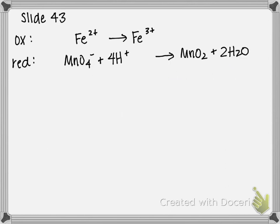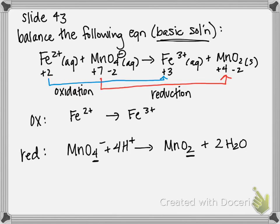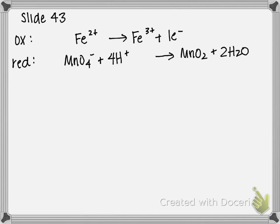Now I have these rewritten on a new slide. We're going to look at number of electrons transferred. For our oxidation, we're going from plus 2 to plus 3. That means we're losing 1 electron. And for oxidation, electrons are written on the product side. So plus 1 electron. For our reduction, recall our oxidation numbers. Manganese is going from plus 7 to plus 4. So that is a charge difference of plus 3. This is a reduction, so I'm going to add 3 electrons to the reactant side.